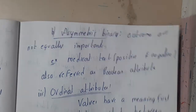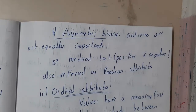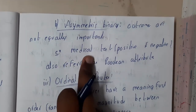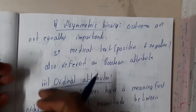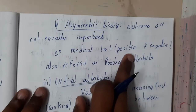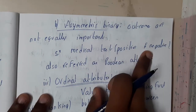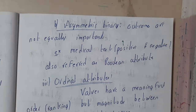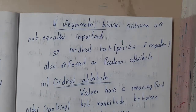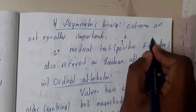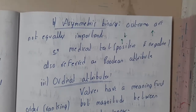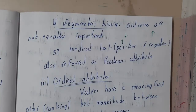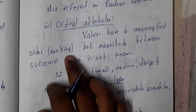Asymmetric binary is where the outcomes are not equal. The example could be a medical test — the chance of getting a positive result is very less compared to negative. Positive means the person has that disease or issue, and having it is really less compared to not having it. Since the outcomes are not equal, these are called asymmetric binary attributes.